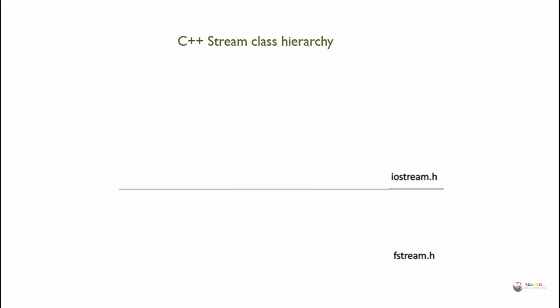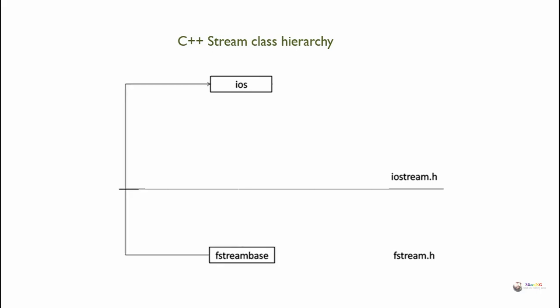The C++ stream class hierarchy involves two header files: iostream.h for stream classes and fstream.h for file stream classes. iostream.h is a base class of the stream class hierarchy, from which the base class of file stream classes — fstreambase — is derived.